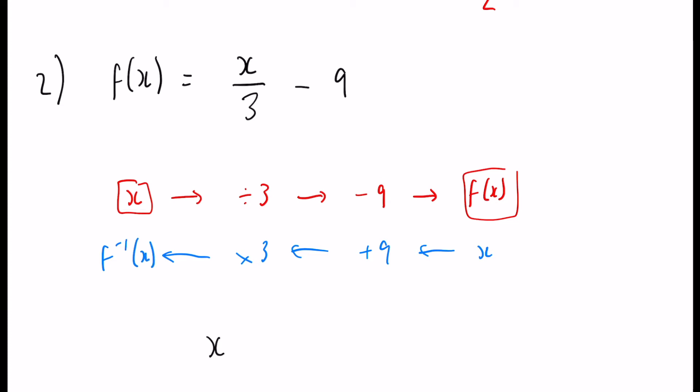So again, x plus 9, all multiplied by 3 is equal to our f to the minus 1 of x, and that is our solution.